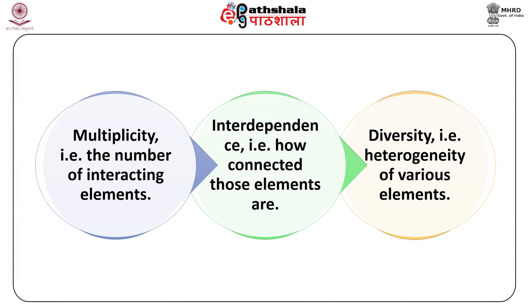According to Surgood and Magrith (2011), three properties determine the complexity of an environment: first, multiplicity — the number of interacting elements; second, interdependence — how connected those elements are; and third, diversity — the heterogeneity of various elements. The greater the multiplicity, interdependence and diversity, the greater the complexity. Business ecosystem exhibits all three of these properties — diverse elements that are interwoven together and continually interact with each other.